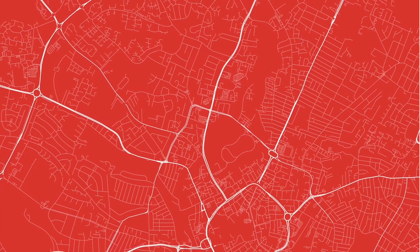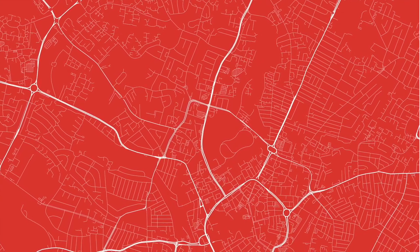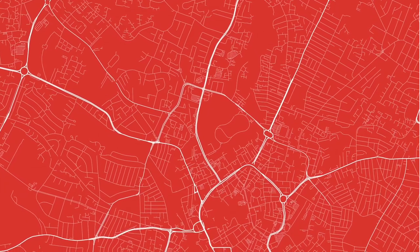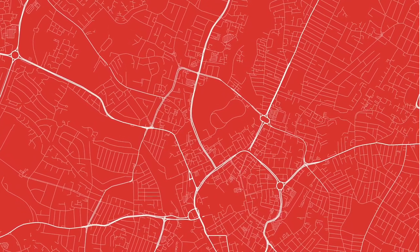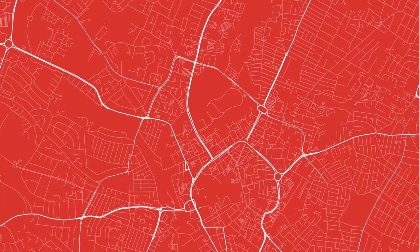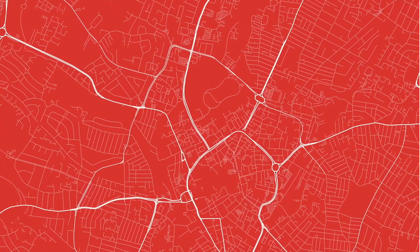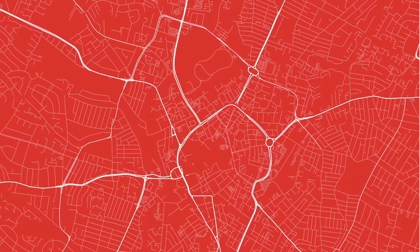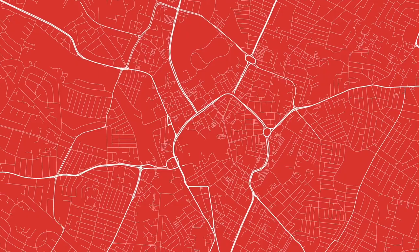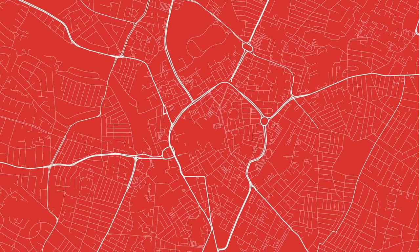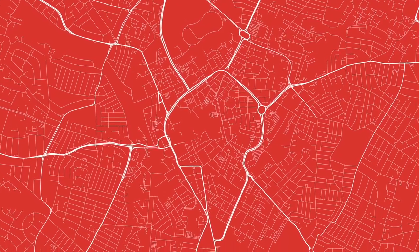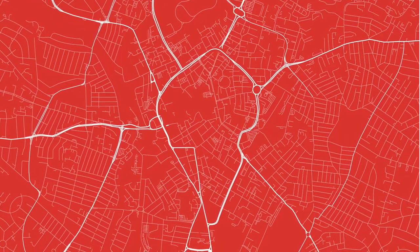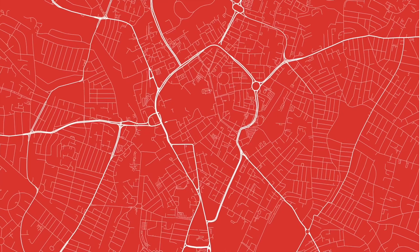This map uses nothing but size to convey information. It's a map of an English city showing roads and only roads — there's only one layer. Size, specifically the thickness of the lines, is used to indicate which are the primary roads, the most important main roads; which are the secondary roads; and then which are the residential streets and local roads that are less important for traffic. So we can convey a lot just by varying this one element: size.